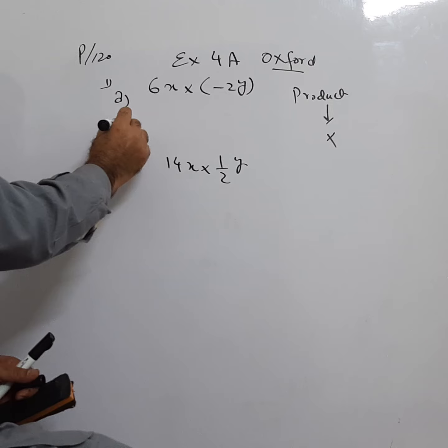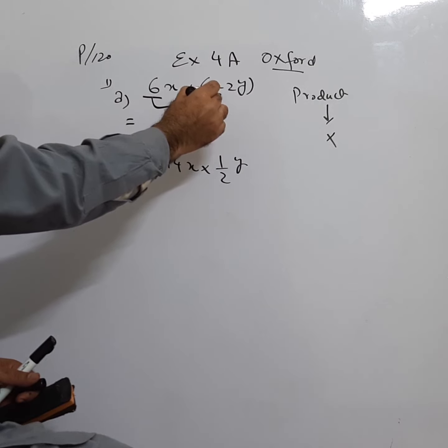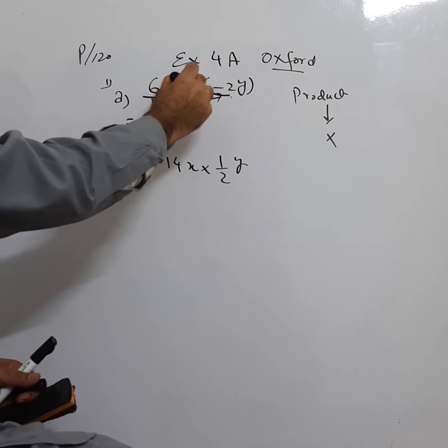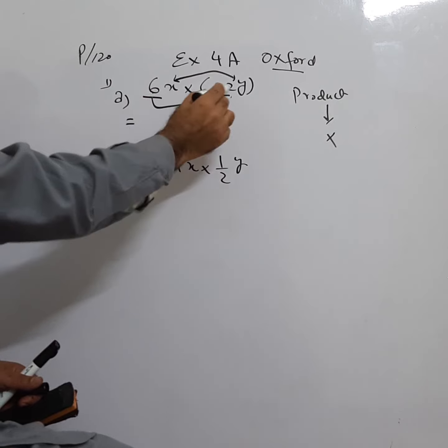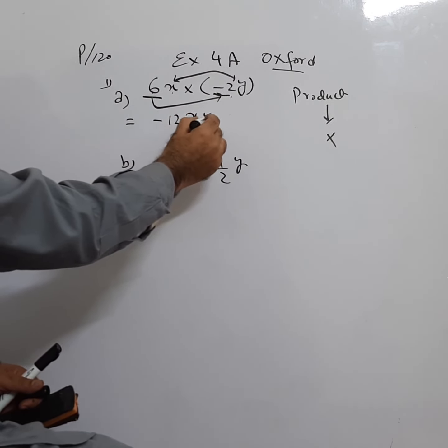What we are doing is we will multiply the constant with the constant and the variable with the variable. 6 into -2 will be -12, and x will be multiplied by y becomes xy. So this is the answer.